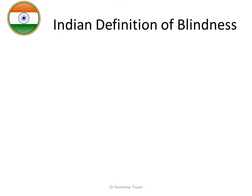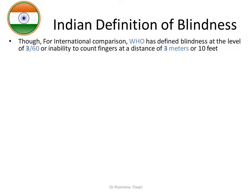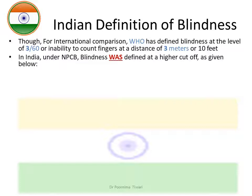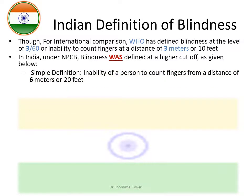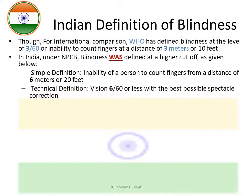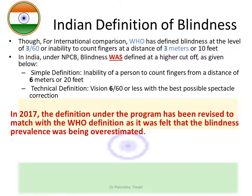When the National Programme for Control of Blindness was launched in India, blindness was defined at a higher cutoff than the WHO standard. Even though WHO gave a cutoff of less than 3/60 for blindness, India defined blindness at 6/60 or lesser, which automatically translated into inability to count fingers from a distance of 6 meters or 20 feet.